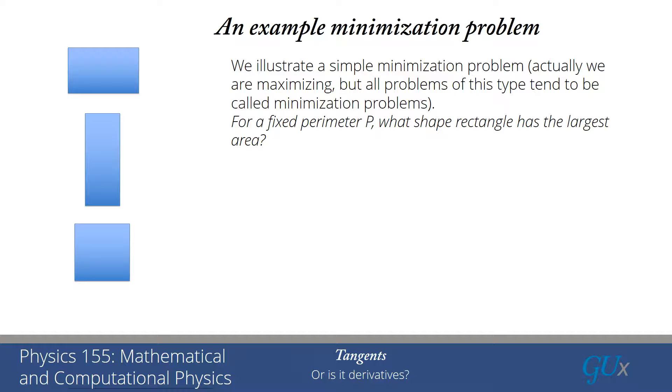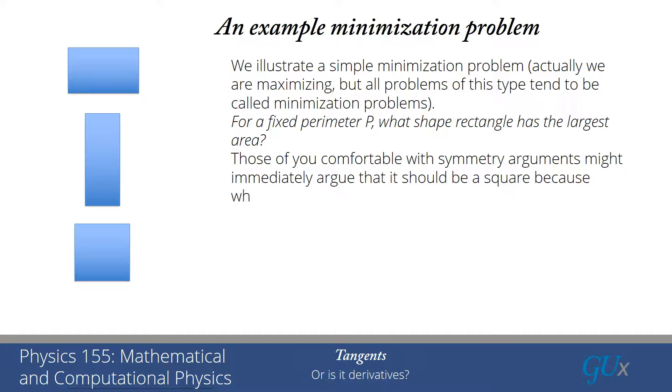So if that is not you and you actually are very comfortable with symmetry arguments, then what you might reason is the only rectangle that is special is the square. And so if I'm trying to find something special about rectangles, it's highly likely the answer is going to be a square because why would it prefer one oblong shape to another oblong shape? And the square is the only one that has this particular property that is not oblong. And indeed that turns out to be correct, but we actually want to see the proof of that.